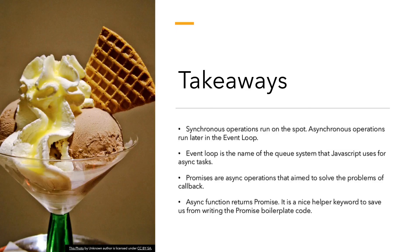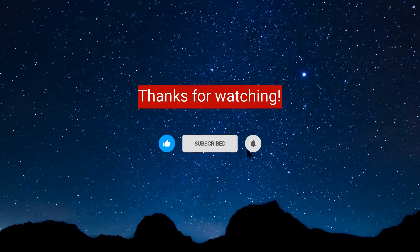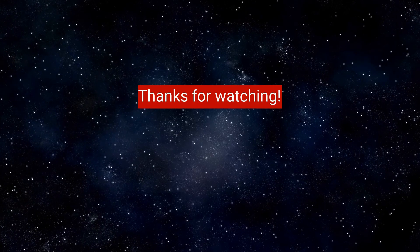Key takeaways for this lesson: Synchronous operations run on the spot, while asynchronous operations run later in the event loop. The event loop is the queue system JavaScript uses for asynchronous operations. Promises are async operations that aim to solve the problems of callbacks. Async functions return a promise, so instead of writing boilerplate, we can use the async keyword before our function. If you enjoyed this video, hit like, subscribe, and the bell icon. Thanks for the support!